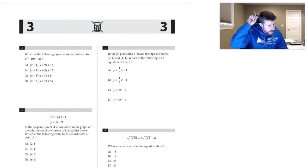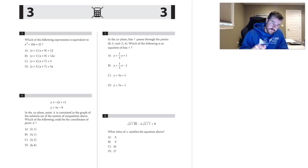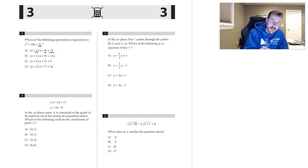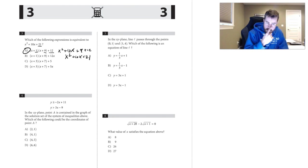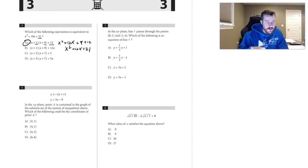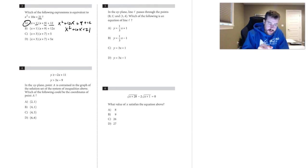Number three: which expression is equivalent to the given one? I'd look at the last term first — 1 times 9 is 9, and 9 plus 12 is 21. Testing choice A: foiling gives x squared plus 10x plus 9, then plus 12, which becomes x squared plus 10x plus 21. That works, so choice A is correct.